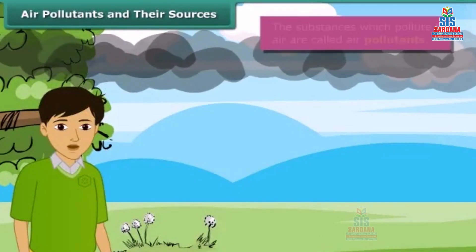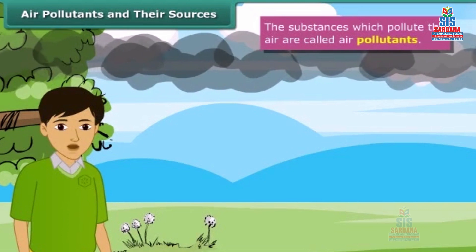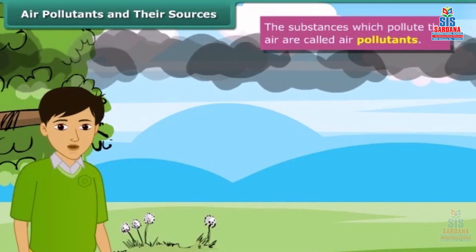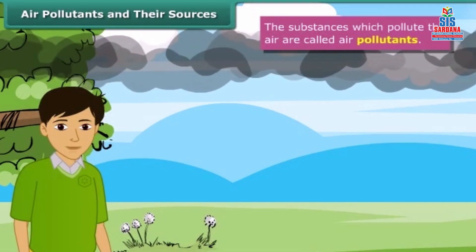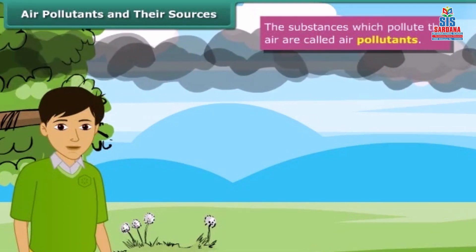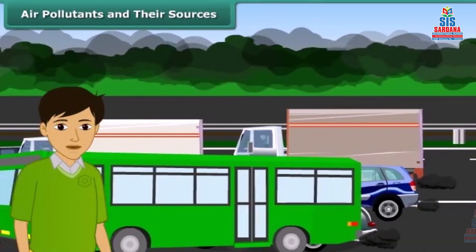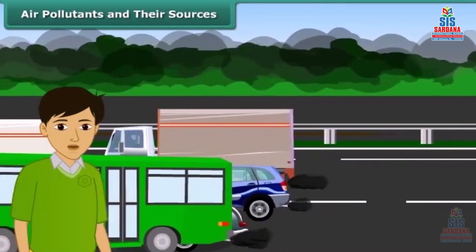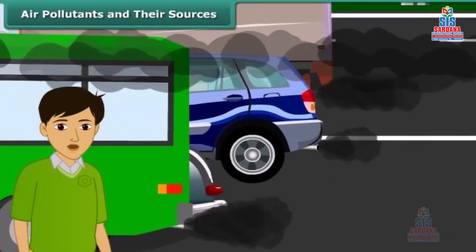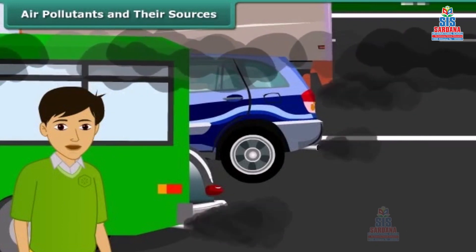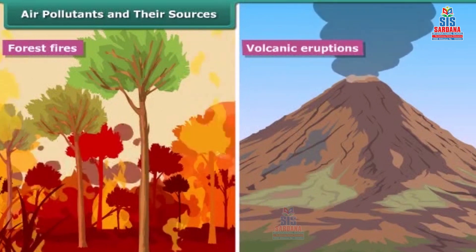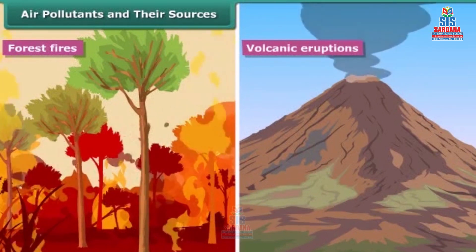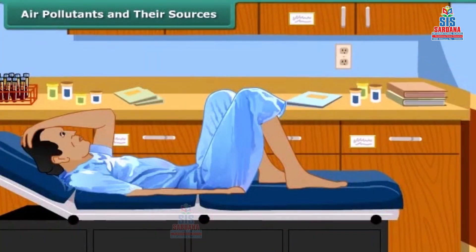Which substances pollute air? The toxic gases like carbon dioxide, sulfur dioxide, nitrogen dioxide, and carbon monoxide are often released by the engines of vehicles like trucks and buses. Sometimes they may come from natural sources like smoke and dust arising from forest fires or volcanic eruptions.